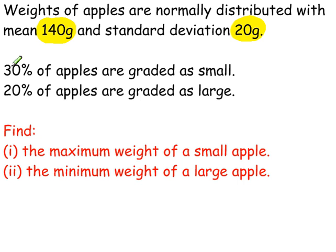30% of apples are graded as small, 20% of apples are graded as large. That's by weight. The smallest 30% will be graded as small, and the largest 20% by weight are graded as large. We're looking for the maximum weight of a small apple and the minimum weight of a large apple.